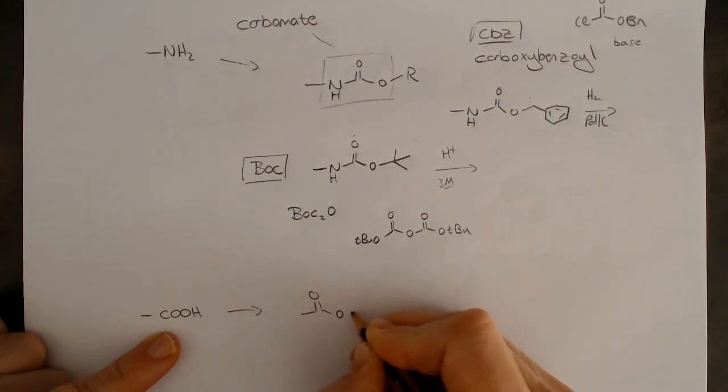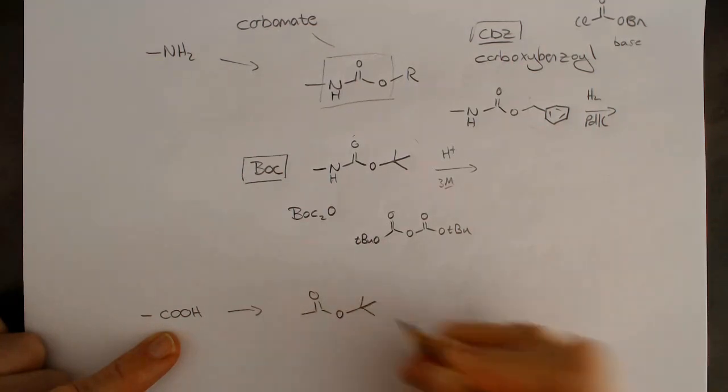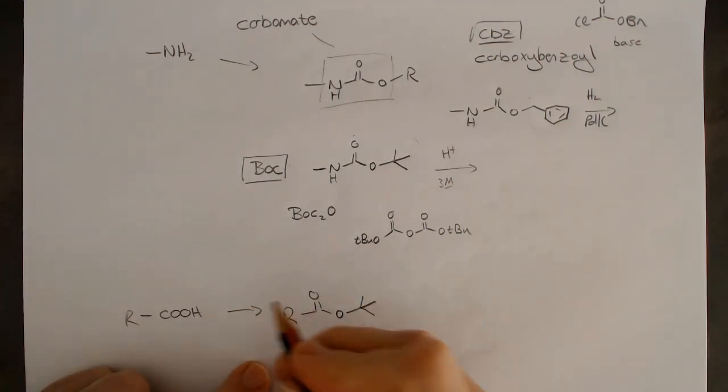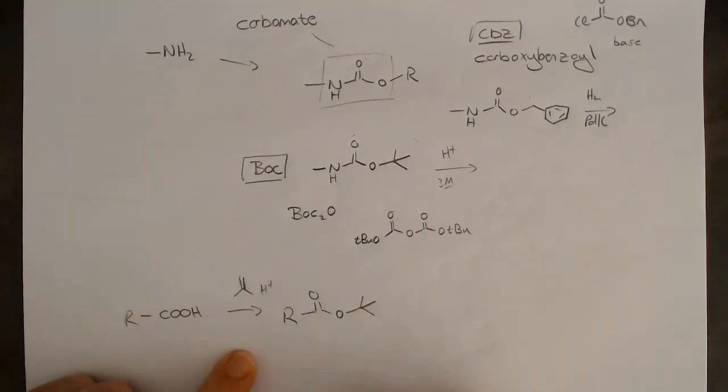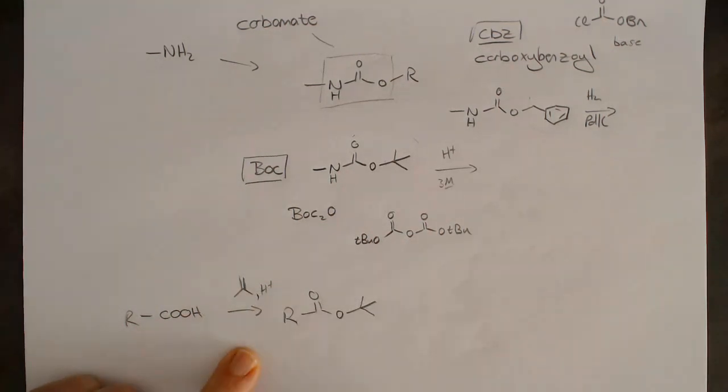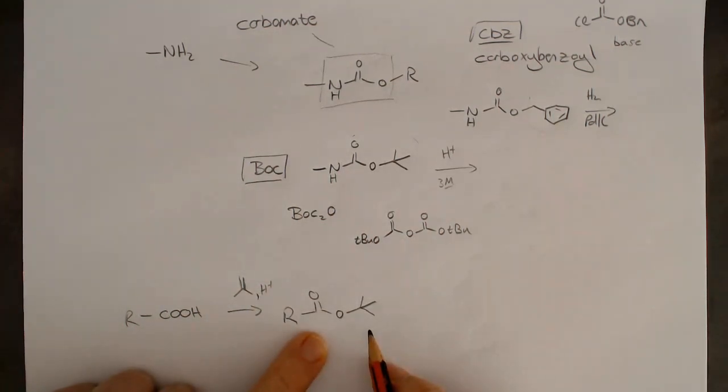We put the t-butyl group on like that. We can make a t-butyl ester, and one way to do it is with butene and acid to catalyze it. We can make a t-butyl ester like that. There are other ways of doing it as well. We could also make this as an acid chloride.